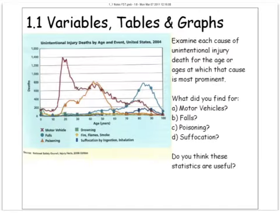Now, the first section is 1.1 on variables, tables, and graphs, and let's take a look at this introductory problem. It says here, examine each cause of unintentional injury death for the age or ages at which that cause is most prominent. They want us to look at four of the different types of deaths and read the graph. Let's just do the first one together. What did we find for the motor vehicles? What is the most prominent age where the death happens? What you want to do is first come over to the graph and look at the title. It says here, it's unintentional injury death by age and event in the U.S. for 2004.